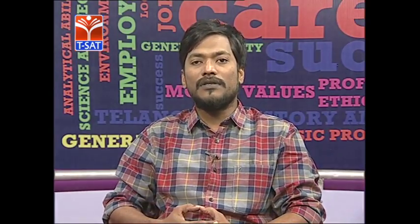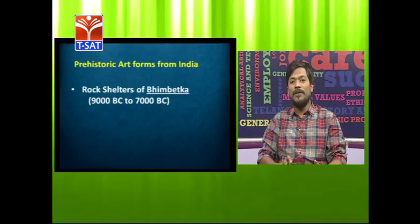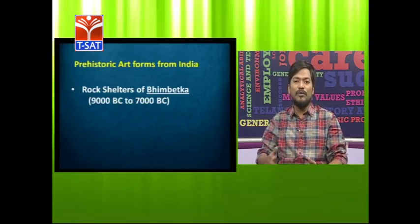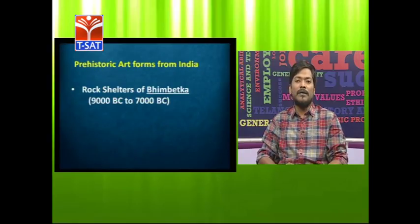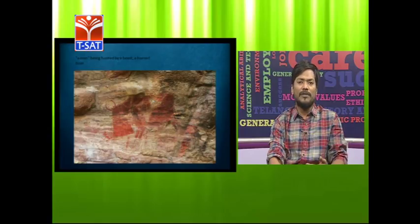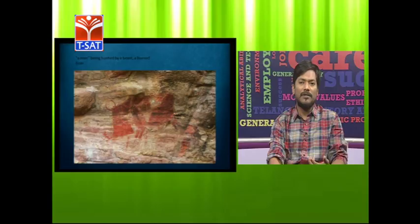In the syllabus, initially in the section of art history you have rock cut shelters and rock art. In India, Bheembetka is the major place — the initial discoveries happened in Bheembetka in Madhya Pradesh. You can note down the time period: 9th century BC to 7th century BC as the starting point. On screen you can see different images, mostly of animals.